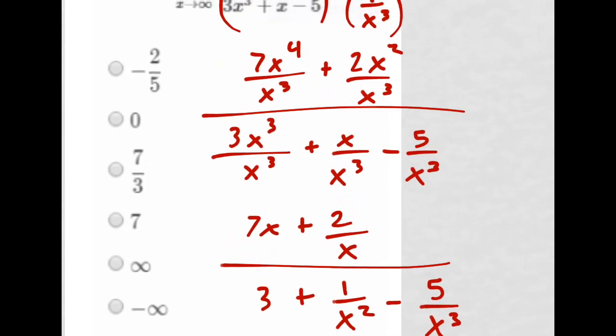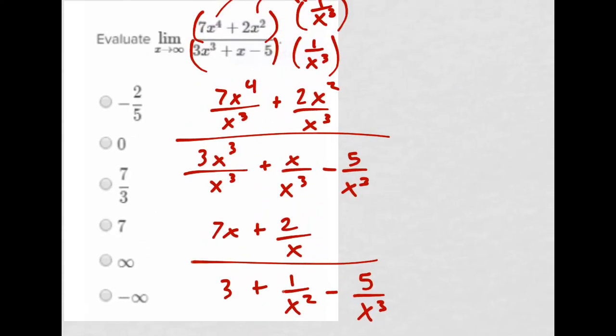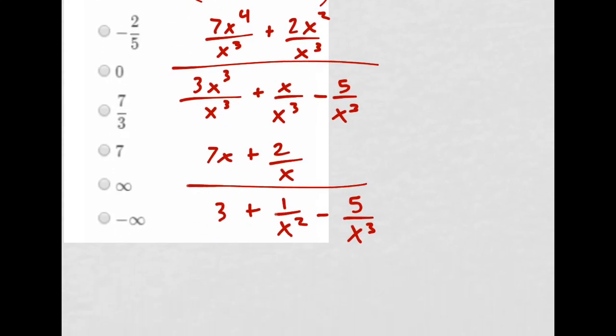If you looked at the tricks, one condition was they had the same power—that's when you look at the coefficients. Here we don't have the same power. We have x to the fourth, the degree of this polynomial, and the degree of this one is 3. They're not the same, so you can't use that trick. We have to use the other trick.